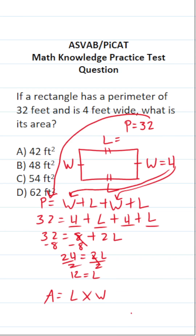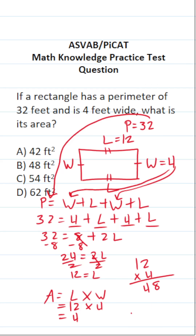So now we know the length of our rectangle is 12 and its width is 4, so its area is going to be 12 times 4. 2 times 4 is 8, and 4 times 1 is 4, so the area of this rectangle is 48 square feet. The answer to this one is B.